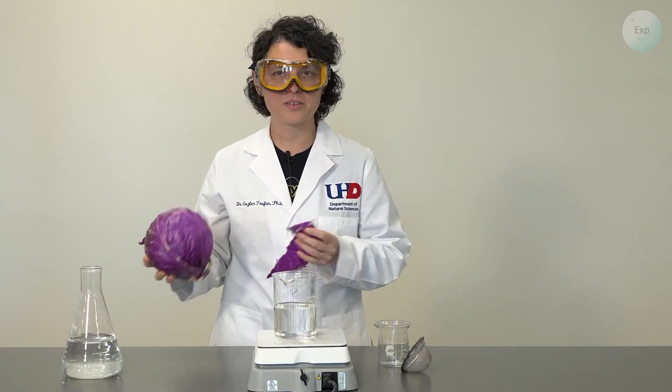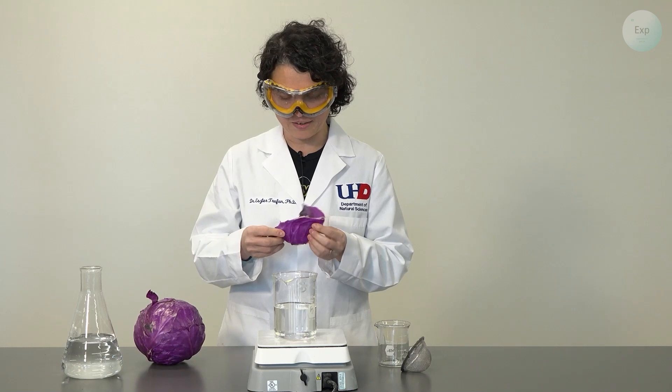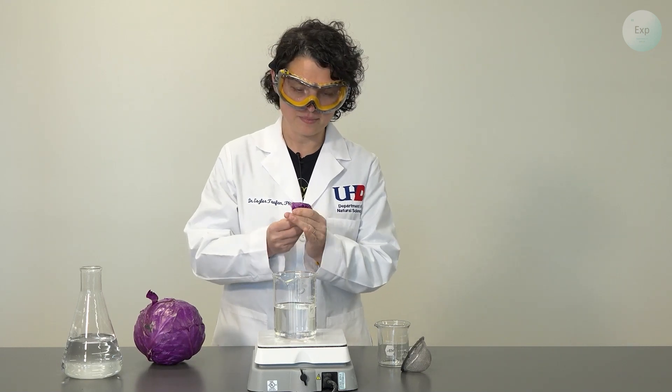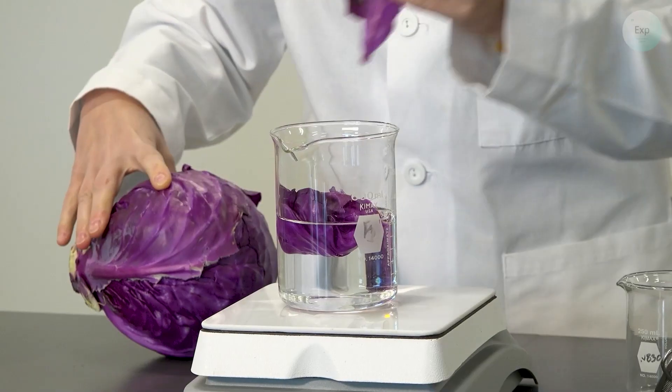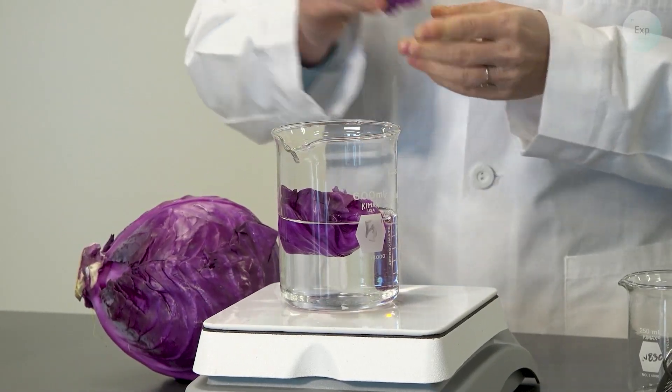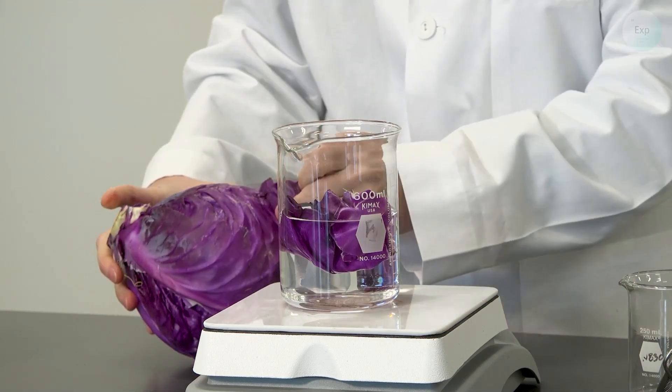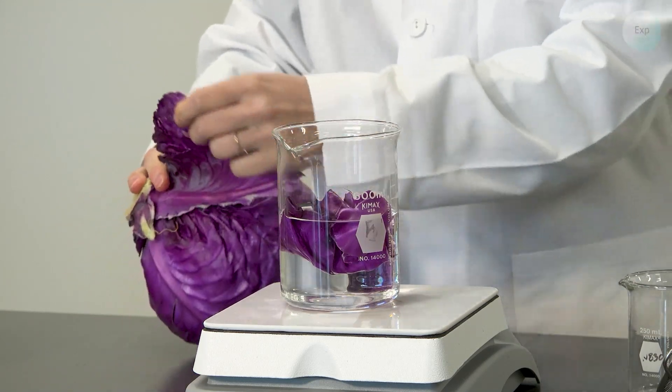And as it boils, we're going to rip off a couple leaves, and we can cut it or rip it, of the red cabbage. And then we'll place it in. There isn't a particular number of leaves that we need to put in, as many as can fit to give us the darkest color for the indicator that we can achieve.